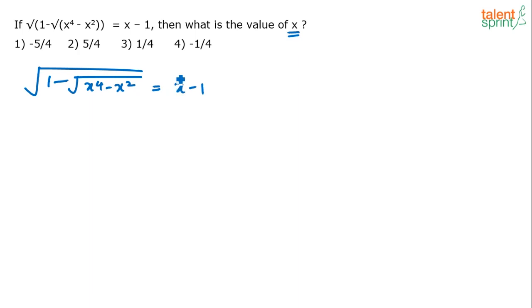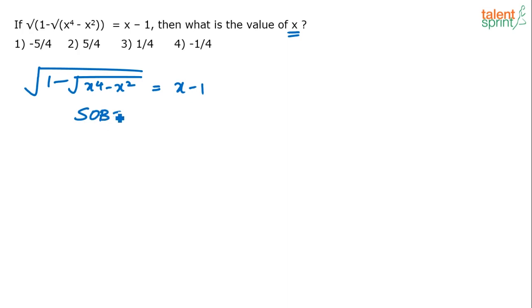There is no other way other than simplifying it. How do you simplify square root of 1 minus square root of x power 4 minus x squared equals x minus 1? Let's square both sides.